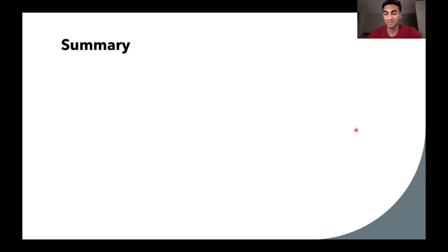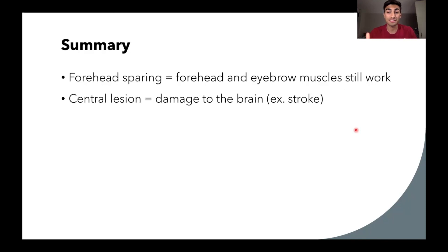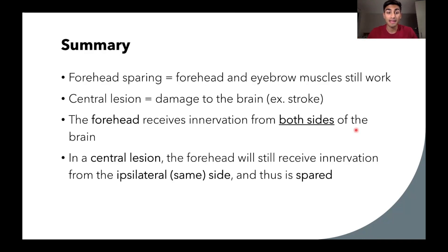So now let's summarize what we learned. We learned that forehead sparing means that the forehead and eyebrow muscles still work. We learned that a central lesion is referring to damage to the brain, for example in a stroke. We learned the forehead receives innervation from both sides of the brain. And so in a central lesion, the forehead is still going to receive innervation from the ipsilateral, or same side, and therefore it's spared.